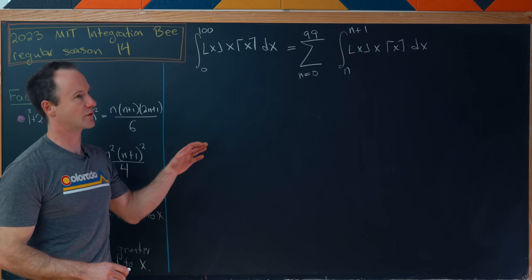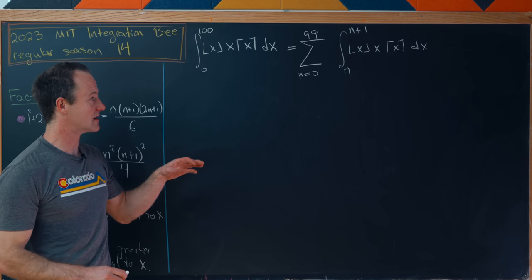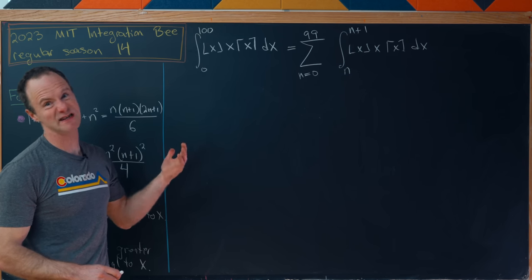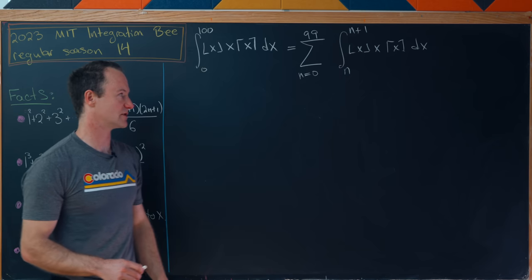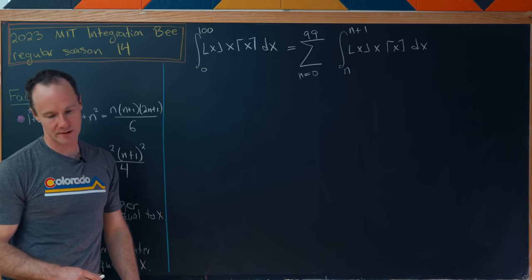Notice my first integral goes from 0 to 1, my second from 1 to 2, my third from 3 to 4, and then my 99th or I guess it's my 100th because I start counting at 0, goes from 99 to 100.